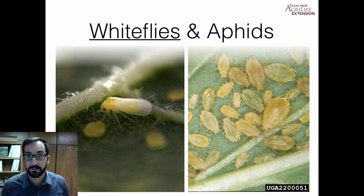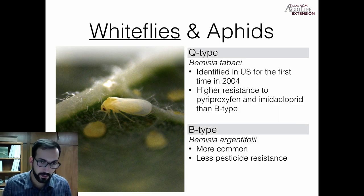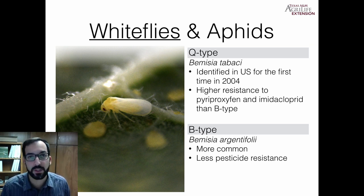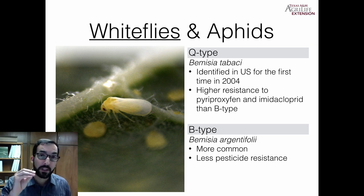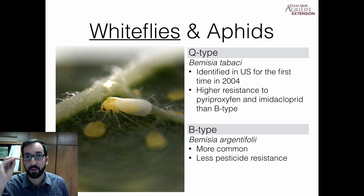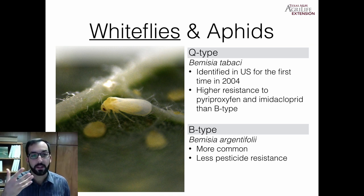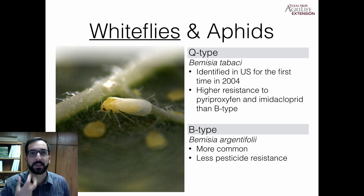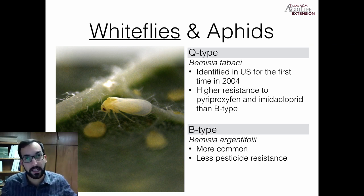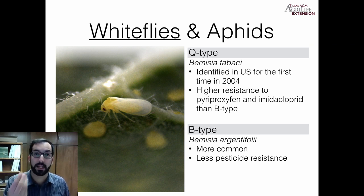Going on to whiteflies and aphids. Whiteflies are sucking insect pests — you can see a feeding mouthpart going into the leaf, sucking those plant juices. A lot of these sucking insect pests are trying to get nitrogen out of the plant, and with that nitrogen they make more amino acids, more protein, and more offspring — they are all just baby-making machines. They act as filter feeders, filtering the phloem, getting the nitrogen out, and excreting the excess as honeydew, which is basically plant sap minus the nitrogen.